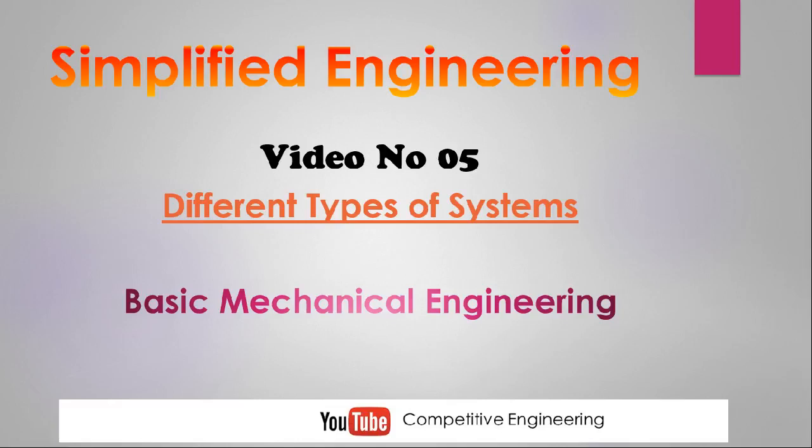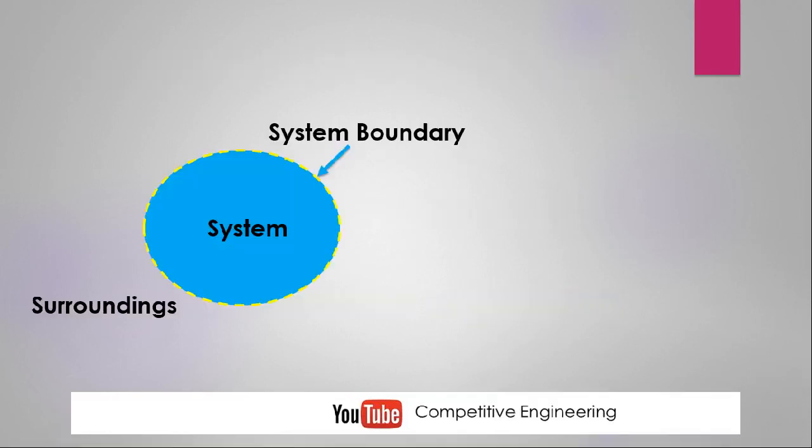Welcome to Simplified Engineering. This is video lecture number five: different types of systems. In our last lecture we covered the concept of system, surroundings, and system boundary, and also the different types of interactions between the system and surroundings — that is, energy interaction and mass interaction. In this lecture we are going to cover different types of systems.